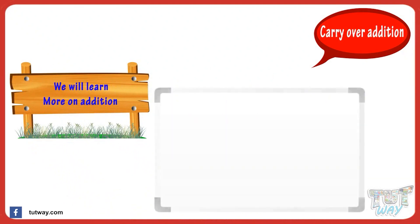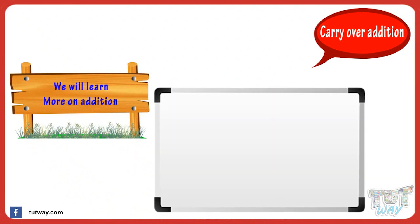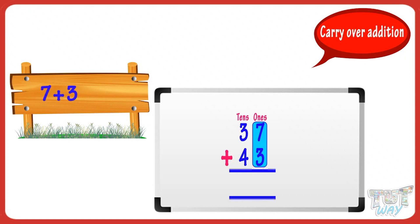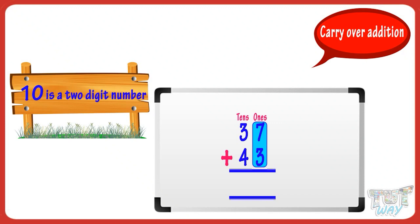First of all, we add the digits in the ones place. So add seven and three. Adding seven and three, we get ten. Now ten is a two-digit number.